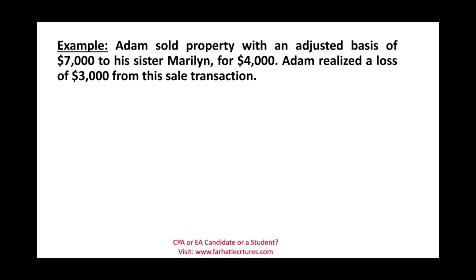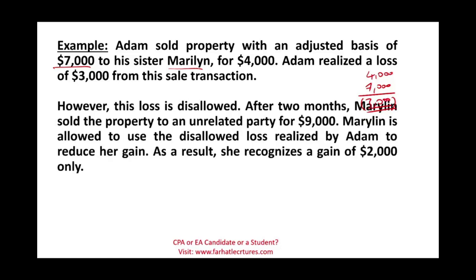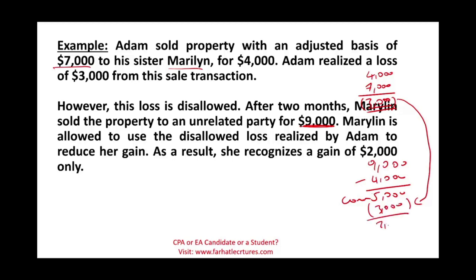Example: Adam sold property with an adjusted basis of $7,000 to his sister Marilyn for $4,000. Adam realized a loss of $3,000; however, the loss is disallowed because it's between related parties. After two months, Marilyn sold the property to an unrelated party for $10,000. Marilyn paid $4,000 and sold it for $10,000, so she had a gain of $5,000. She can use the previously disallowed $3,000 loss to bring her gain down to $2,000. The disallowed loss could reduce the gain to $0 at most, but no lower.